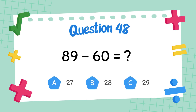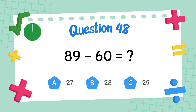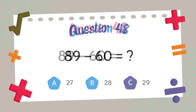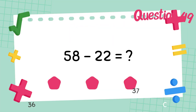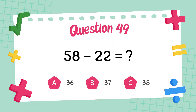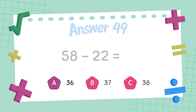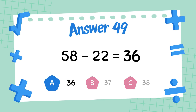What is eighty-nine minus sixty? The answer is thirty-six.